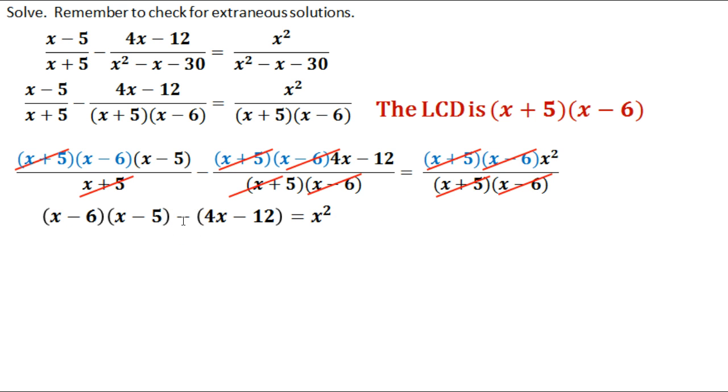So let's get rid of that at this point. We need to distribute that negative both to the 4x and to the negative 12. So that gives us our negative 4x plus 12. So that's a big thing. It did change the sign there. That will be one area in which students sometimes have errors.